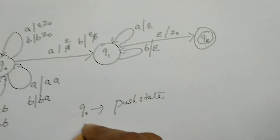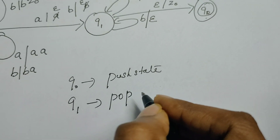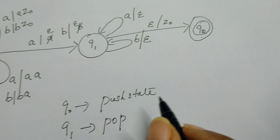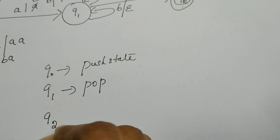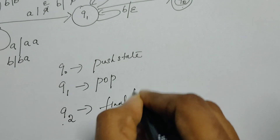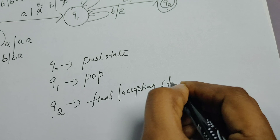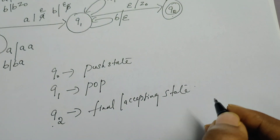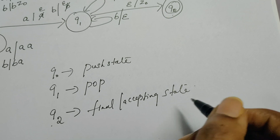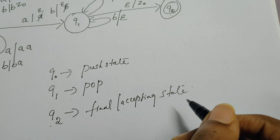When the PDA guesses it has reached the midpoint, reading A with stack top A or reading B with stack top B, it transitions to q₁ and pops. From q₁, reading A with stack top A — pop; reading B with stack top B — pop; staying in q₁ until the string ends. Once it reaches the end of the string and the stack contains only Z₀, it enters q₂ — the final accepting state. Q₁ is the pop state. The instantaneous description for the same problem will be covered in another video.